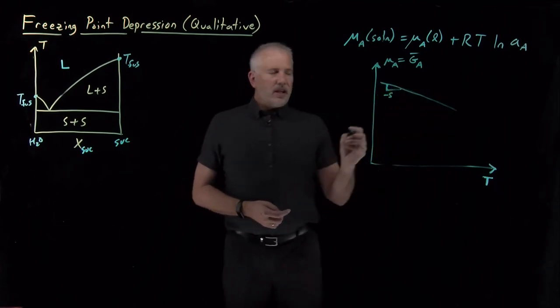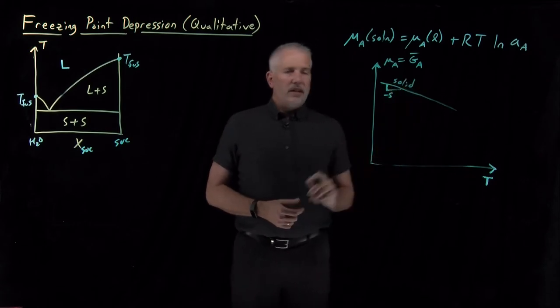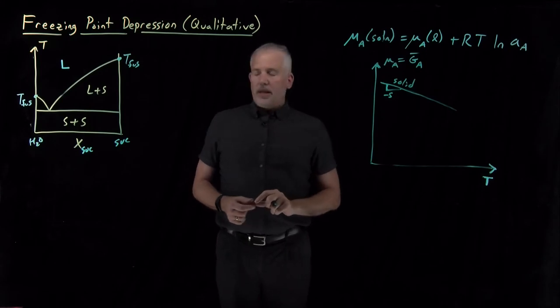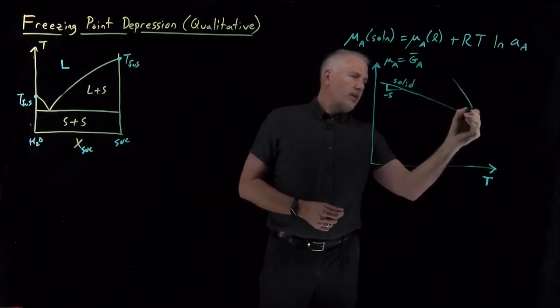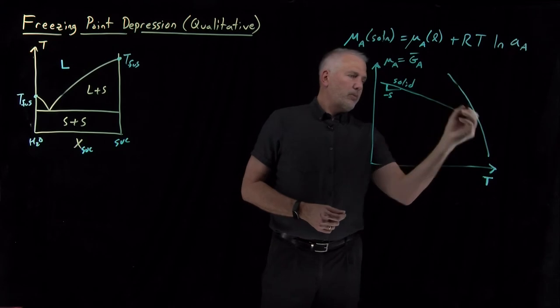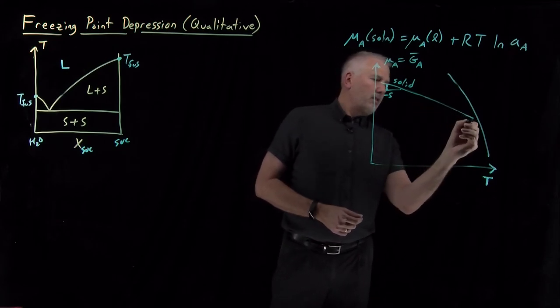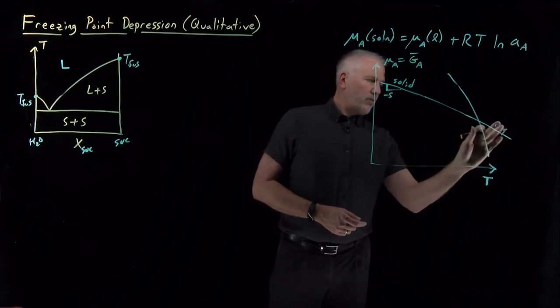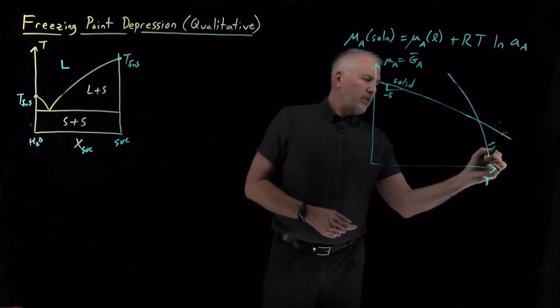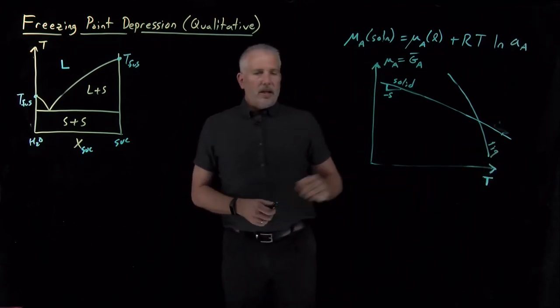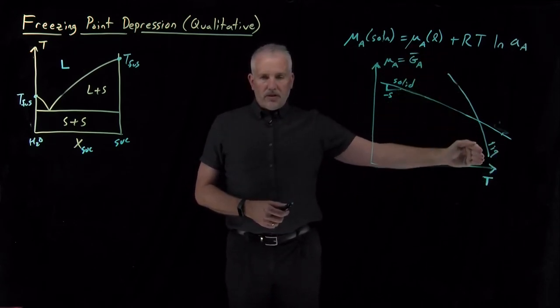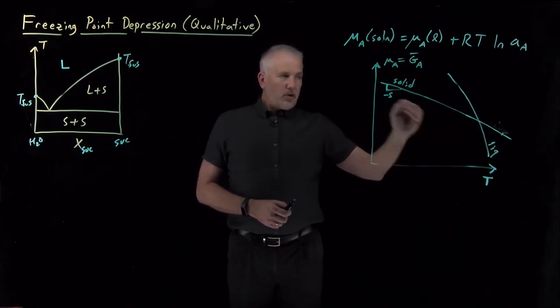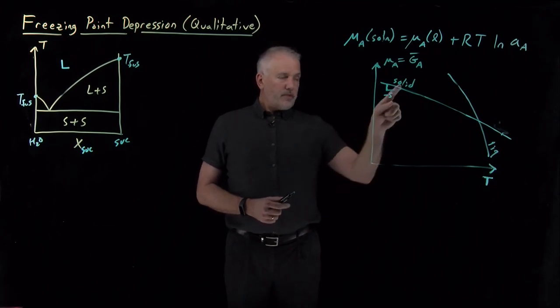So there's the chemical potential of the solid phase. As I heat the solid up, its chemical potential drops. The same thing is true of the liquid. Here's the chemical potential of the pure liquid phase. I've drawn that as a steeper curve because the entropy of the liquid is a larger value than the entropy of the solid, so it's falling more quickly.